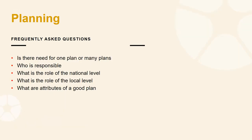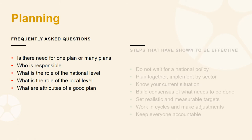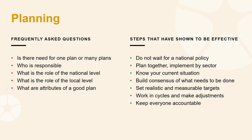Now let's look at planning. Frequently asked questions for this theme include: is there a need for one plan or many plans, who is responsible, what is the role of the national level versus the local level, and what are the attributes of a good plan? Steps that have shown to be effective: do not wait for a national policy to be in place. Work done by different sectors and good practice experience is often a catalyst for developing national policy. Use the Nurturing Care Framework to strengthen actions — bring all relevant sectors and stakeholders together to plan together.